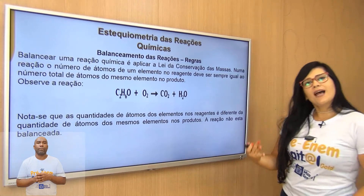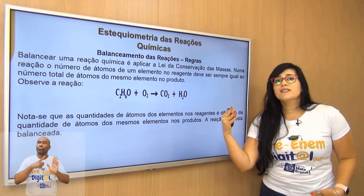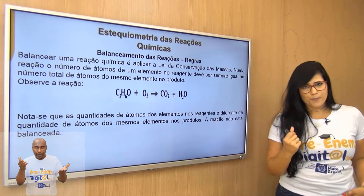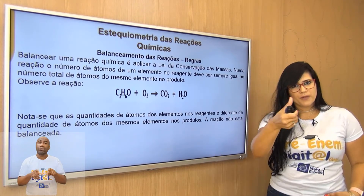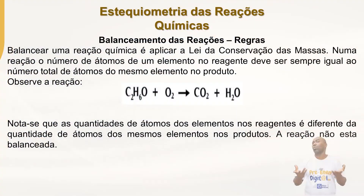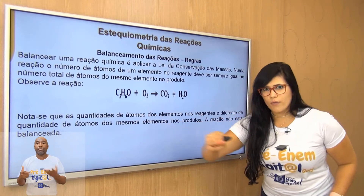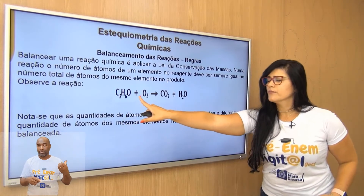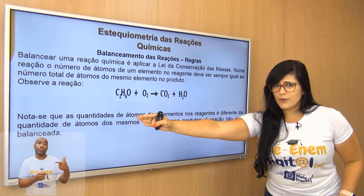A partir disso, posso começar o balanceamento das reações químicas. Quais são as regras? Primeira: observar a reação e ver se a quantidade de átomos que tenho no início é igual à do final. Segunda: raciocinar inicialmente com os elementos que aparecem em uma única substância — os que aparecem menos vezes. Para facilitar, procuro quem é metal e quem é ametal, pois eles geralmente aparecem menos vezes e começamos balanceando por eles.